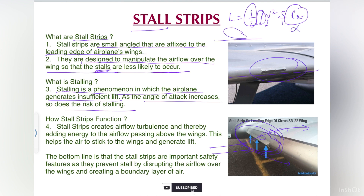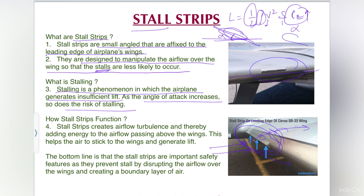The angle of attack is the angle between the chord of the aerofoil and the relative airflow. As the angle of attack increases, the coefficient of lift also increases, but at the critical angle of attack the complete aerofoil stalls — meaning there is no lift generation. This happens because at that particular angle of attack, the air flowing above the wing does not stick to the surface, causing flow separation and no lift generation.